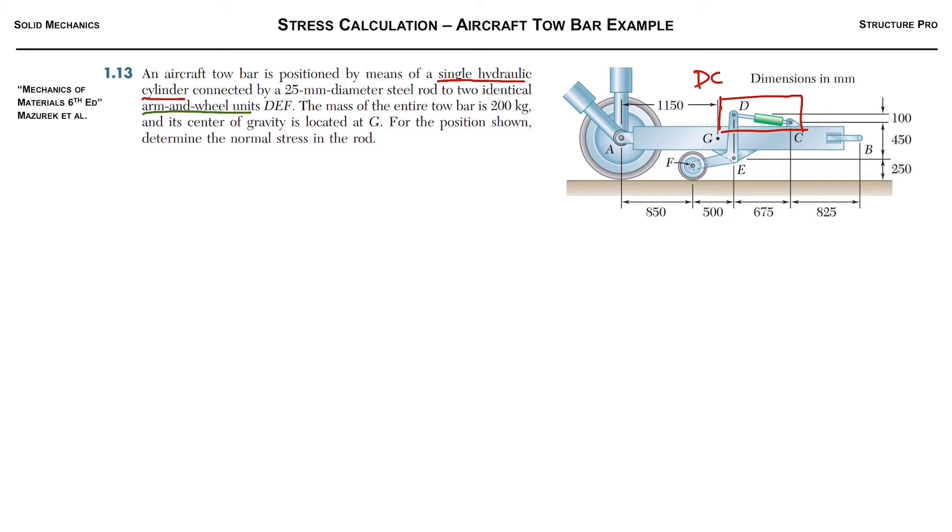There's two of them on either side, that's element DEF. So the big wheel here, that's basically the airplane's front wheel, and the tow bar itself is 200 kilograms.